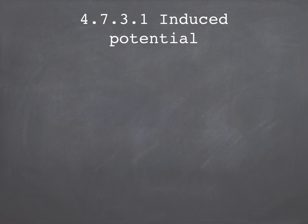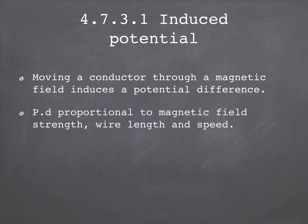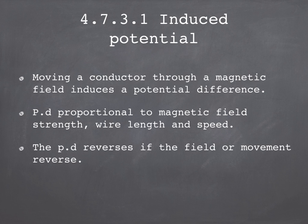So to summarize. If we move a conductor through a magnetic field, then a potential difference is induced across that conductor. That potential difference is going to be proportional to the magnetic field strength, the wire length, and the speed of movement. If you increase any of those things you get a bigger potential difference. If you move the wire the opposite way or you turn the magnet around so the magnetic field is reversed, then the potential difference is reversed as well.